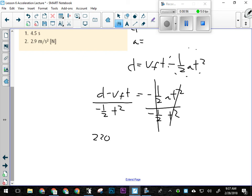D was 220 meters minus VF, which was 44.4, times T, which was 6.2. And I'm going to divide that by negative 1/2 times 6.2 squared.